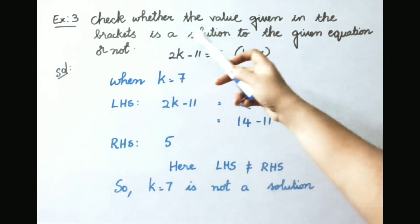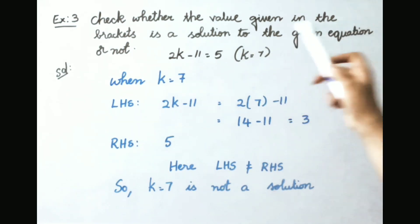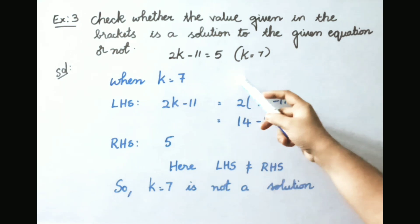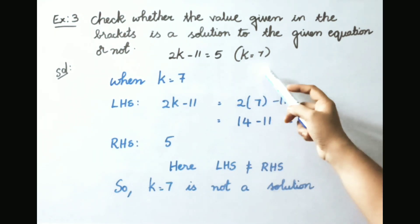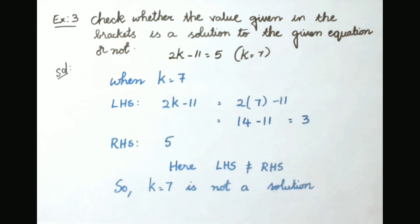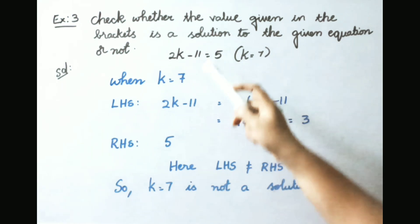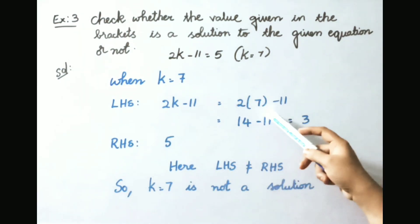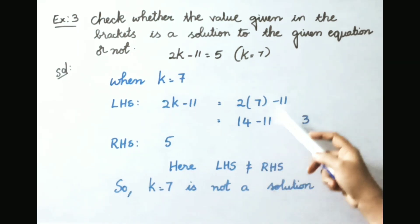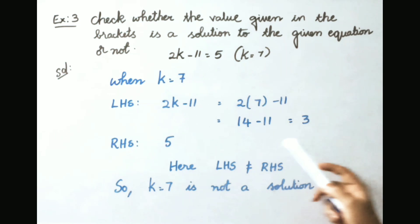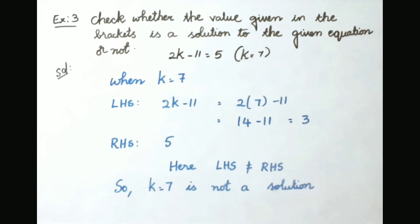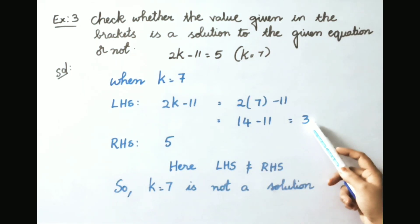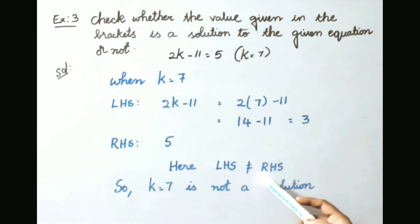Example 3: check whether the value given in brackets is a solution to the given equation or not. Equation: 2k minus 11 equals 5, with k equals 7. Substituting k equals 7 into the LHS: 2 into 7 minus 11 equals 14 minus 11 equals 3. The RHS is 5. Since LHS equals 3 and RHS equals 5, LHS is not equal to RHS, so k equals 7 is not a solution.